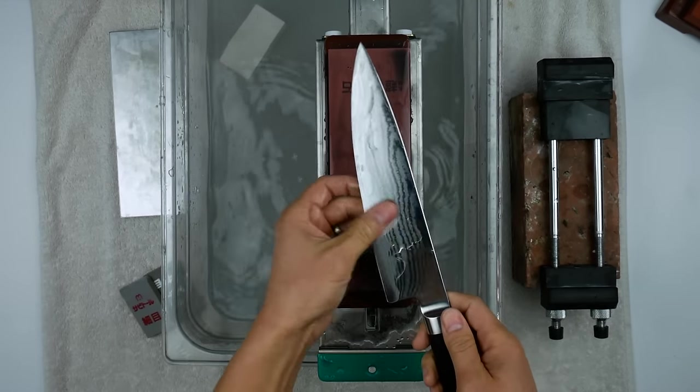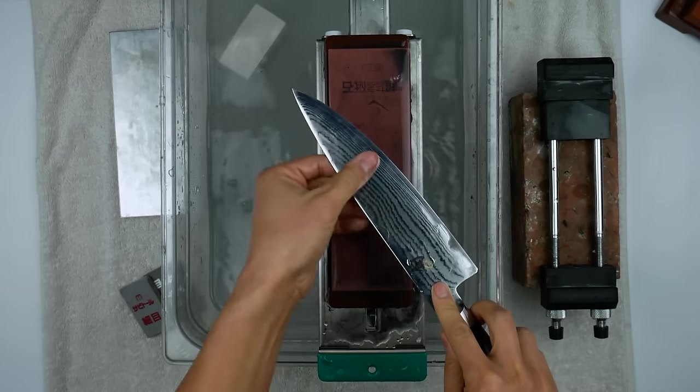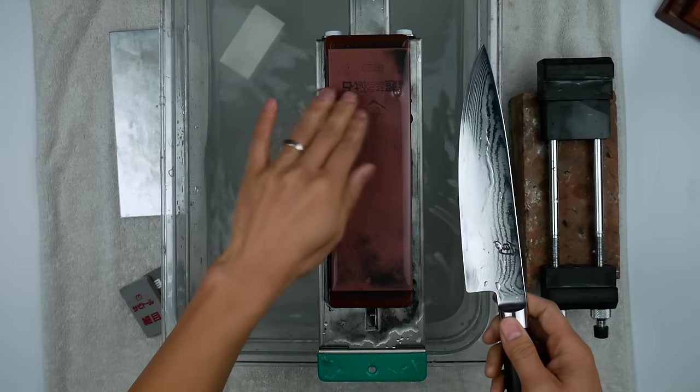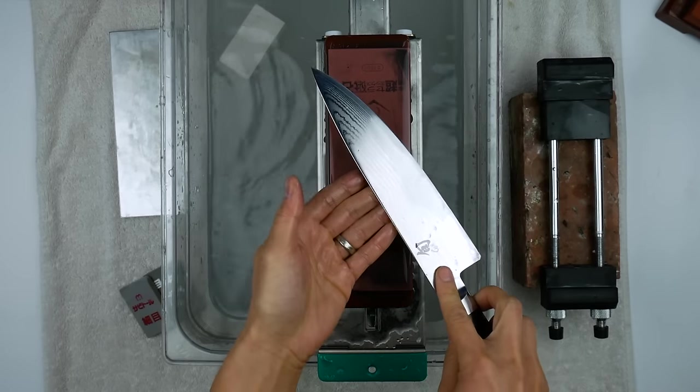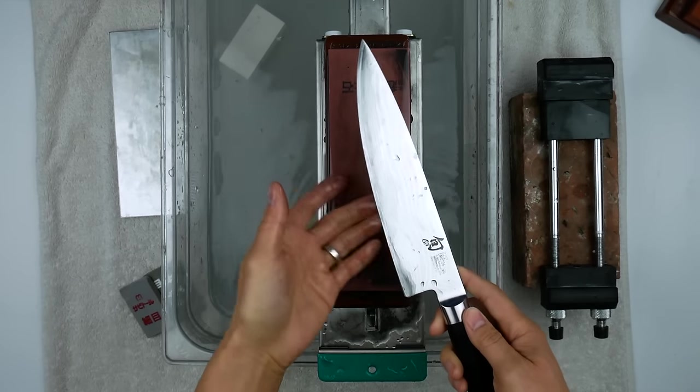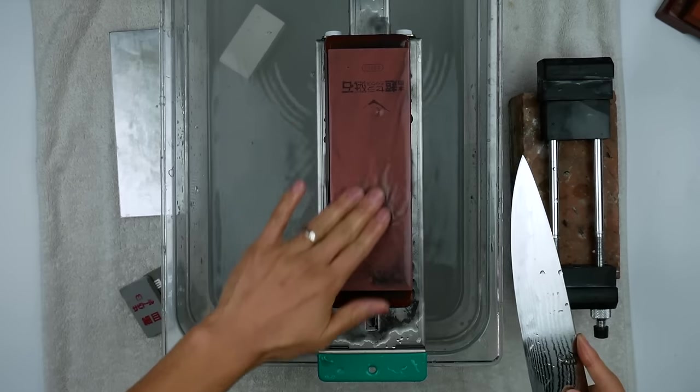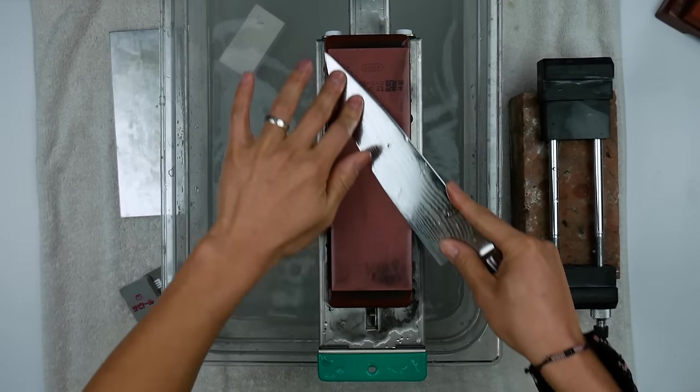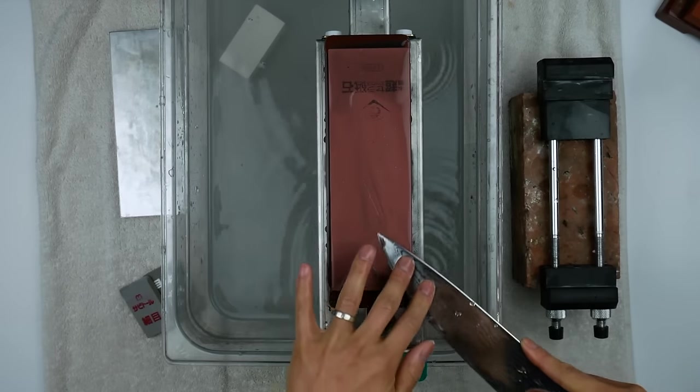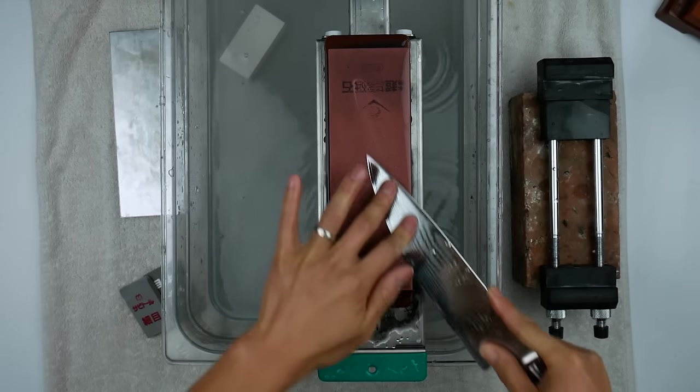Alright, so that is the sharpening portion of the session, so now we're going to go through some stropping. Basically what you do is because we just sharpened on this side the burr is now folding over here, so you want to now straighten the burr out. The way I do it is I just do these broad strops here.